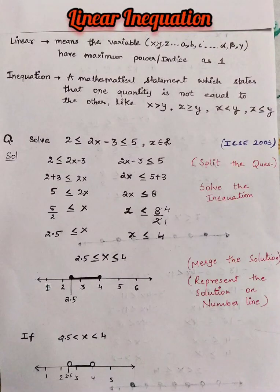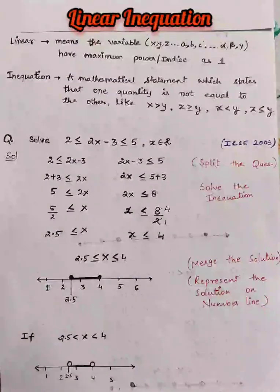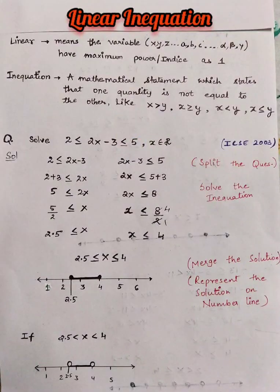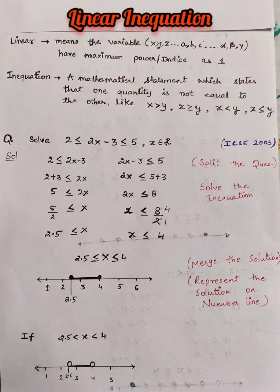Let's see the first question which was asked in ICSC 2003: 2x − 3 ≥ 2 and ≤ 5, where x belongs to R, that is real numbers. To solve the question, we will first split it into two inequations.